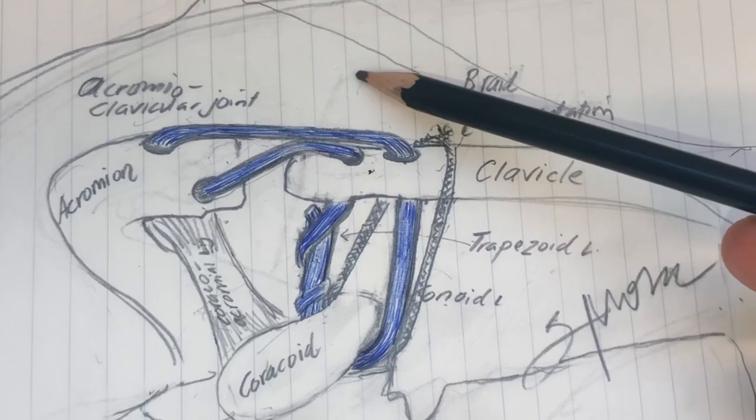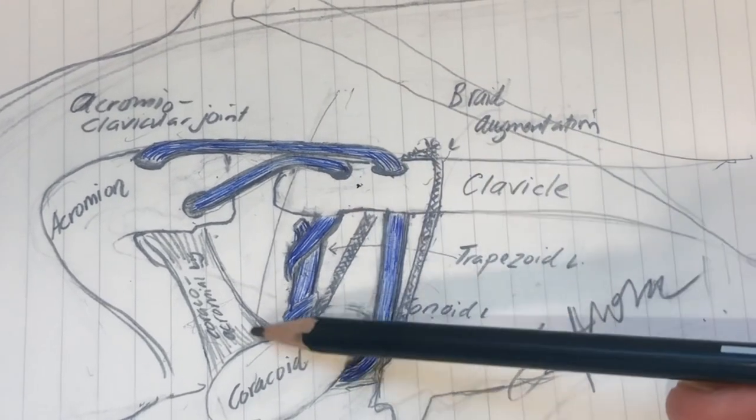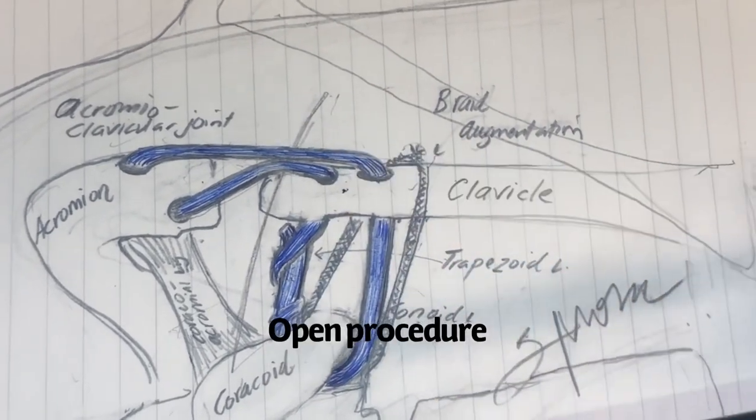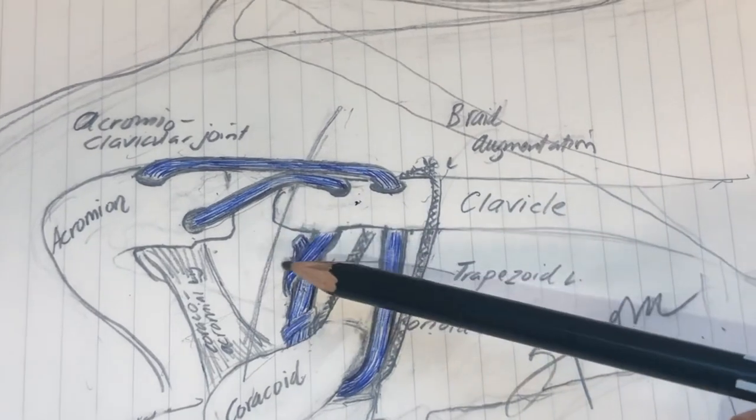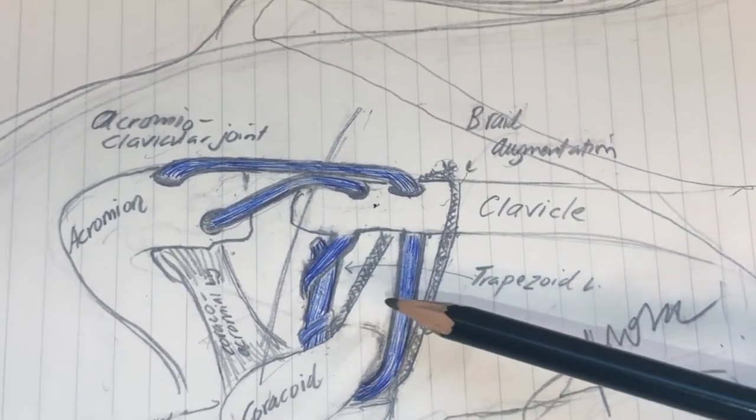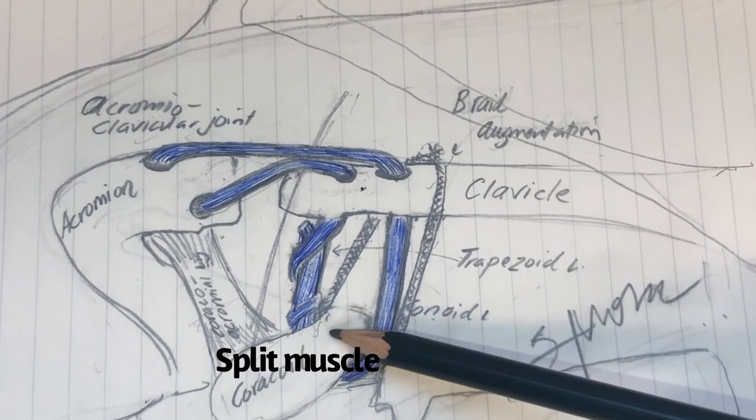It's not arthroscopic. I make an incision in the front of the shoulder. Usually it's right in the front of the shoulder like this. Open the skin. Go through the muscle. Just split the muscle. Feel the base of the coracoid.